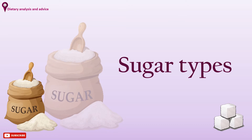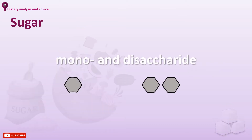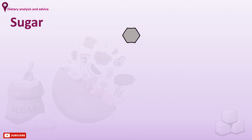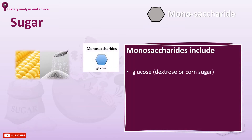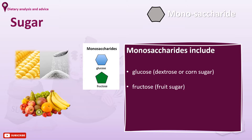Starting with what affects our teeth the most: sugar types. Sugar is used to refer to the mono and disaccharide members of the carbohydrates family. Monosaccharides — saccharides formed of a single molecule — include glucose (also known as dextrose or corn sugar), fructose (the fruit sugar), galactose, and mannose.